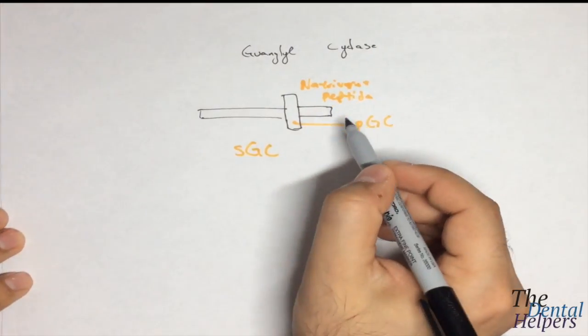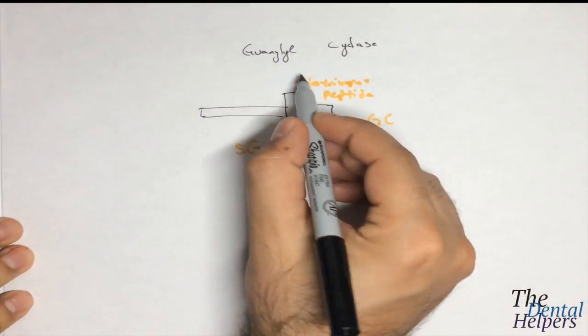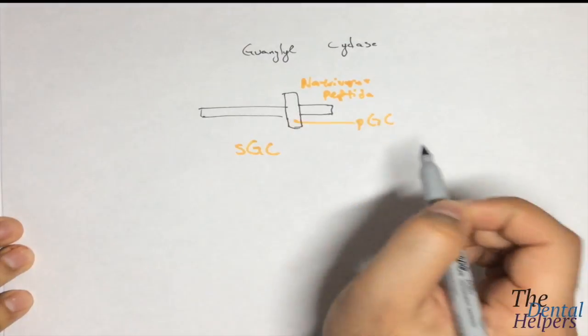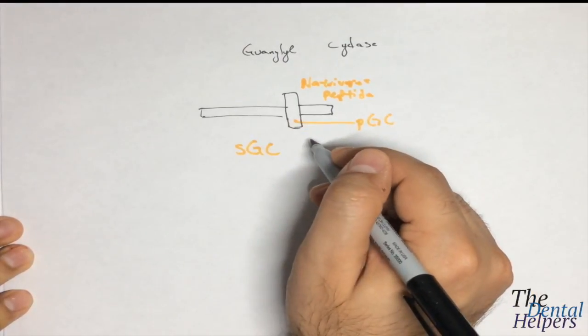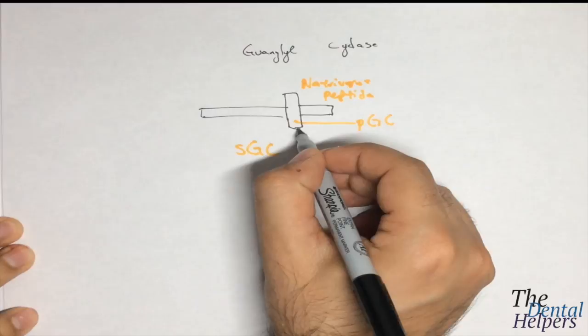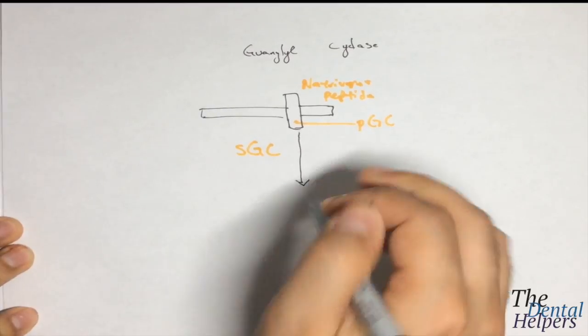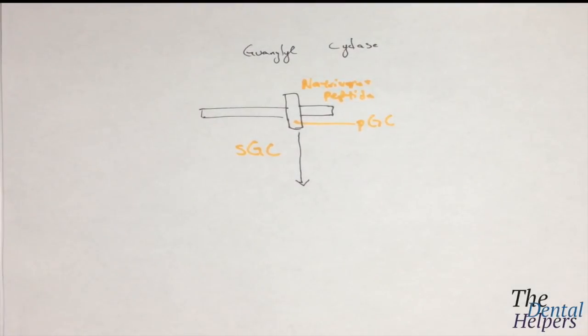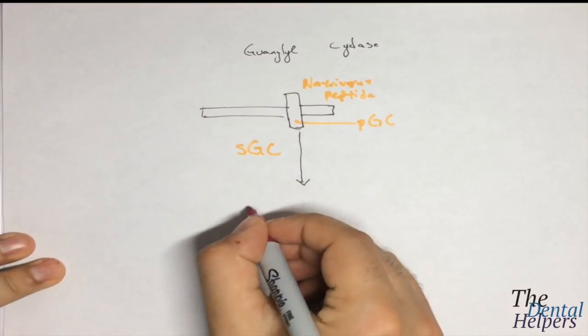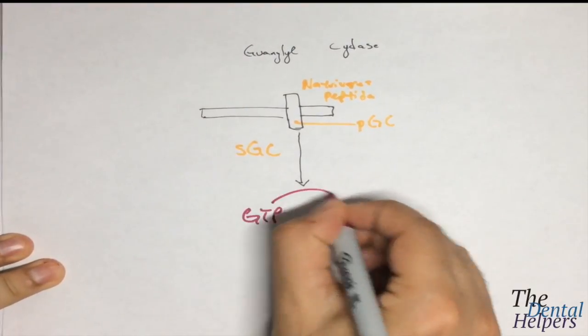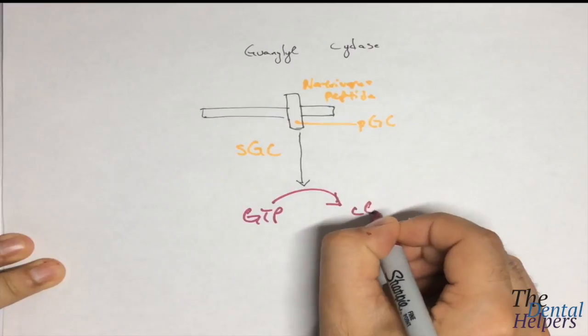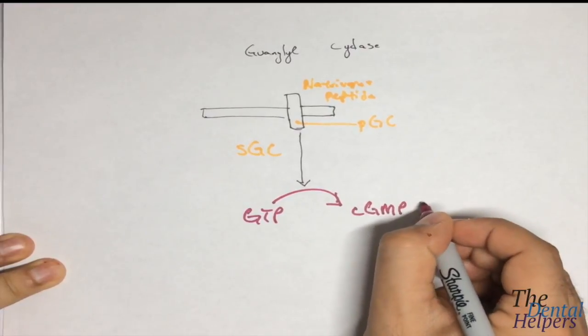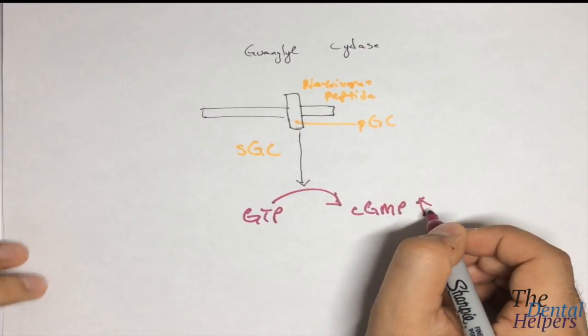In the natriuretic peptide route, you have binding occurring at the particulate GC receptor, and this is going to lead into the conversion of GTP to cGMP. So we have an increase in cGMP.